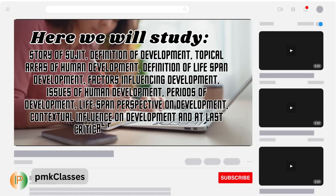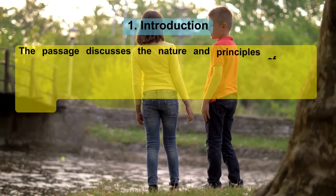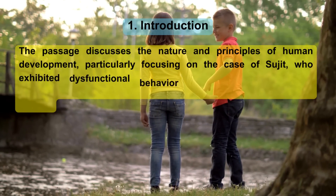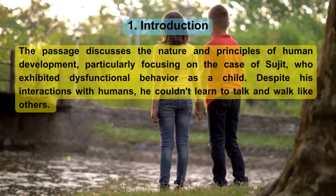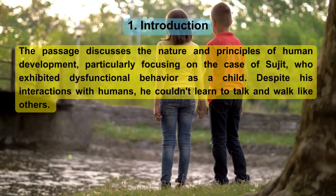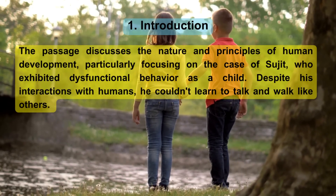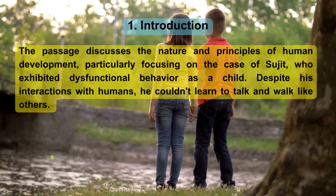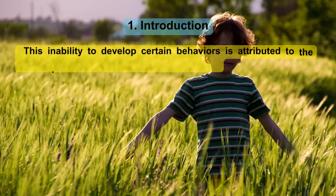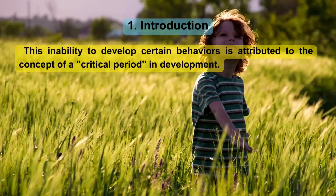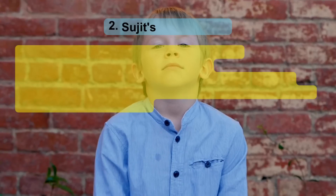At last, we will cover the critical period hypothesis. Introduction: The passage discusses the nature and principles of human development, particularly focusing on the case of Sujit, who exhibited dysfunctional behavior as a child. Despite his interactions with humans, he couldn't learn to talk and walk like others. This inability to develop certain behaviors is attributed to the concept of a critical period in development.